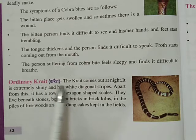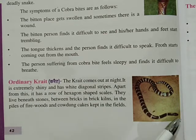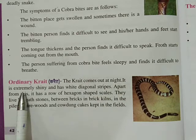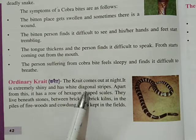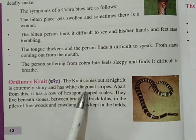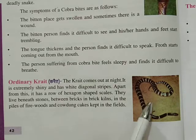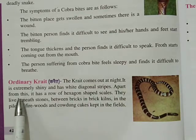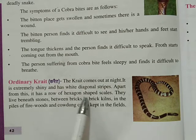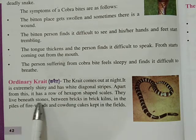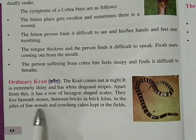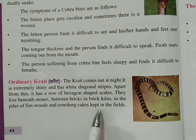Next — ordinary krait. The krait comes out at night — jadatar case mein krait hamesha raat mein nikalti hai. Aapne iske baare mein bahut suna hoga; humare area mein sabse zyada hi paya jata hai. It is extremely shiny and has white diagonal strips. Usmein bahut hi chamakdar aur white color ke diagonal stripes paye jaate hain. Apart from this, it has a row of hexagon-shaped scales. They live beneath stones, between bricks, in piles of firewood, and in cow dung cakes.